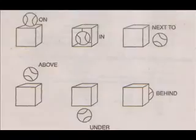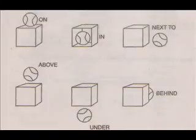Look at picture number 4: above. Where is the ball? The ball is above the box. Above is a preposition and the box is a noun, so above the box is a prepositional phrase. Look at picture 5: under. Where is the ball? The ball is under the box. Under is a preposition and the box is a noun, so under the box is a prepositional phrase or location.